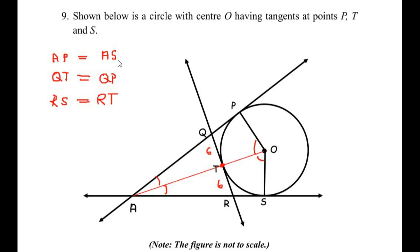Using the values we established: QT equals QP, so if QT is 6 then QP is also 6. And RS equals RT, so if RT is 6 then RS is also 6 centimeters — both derived using the Two Tangents Theorem.